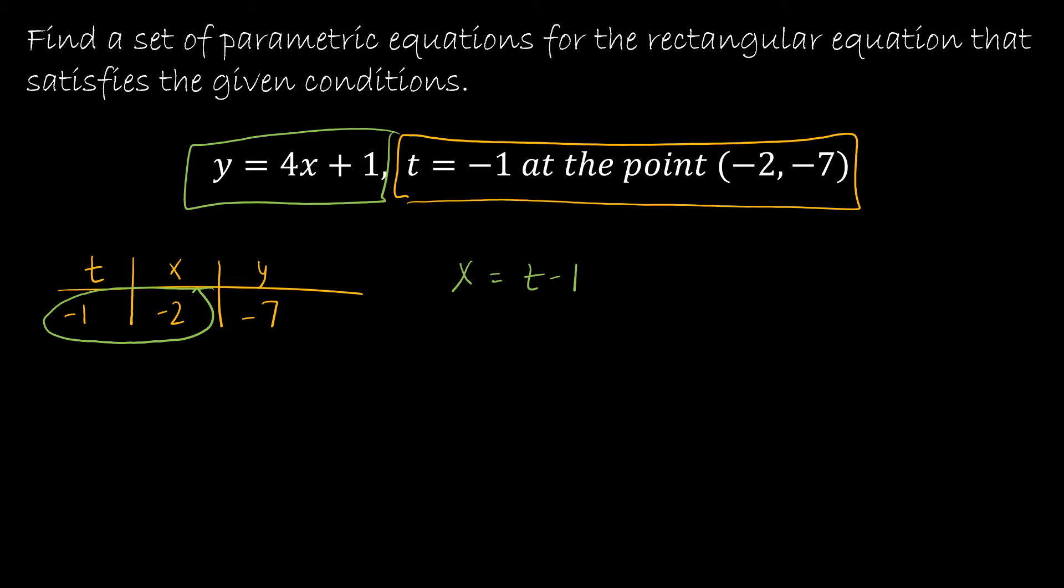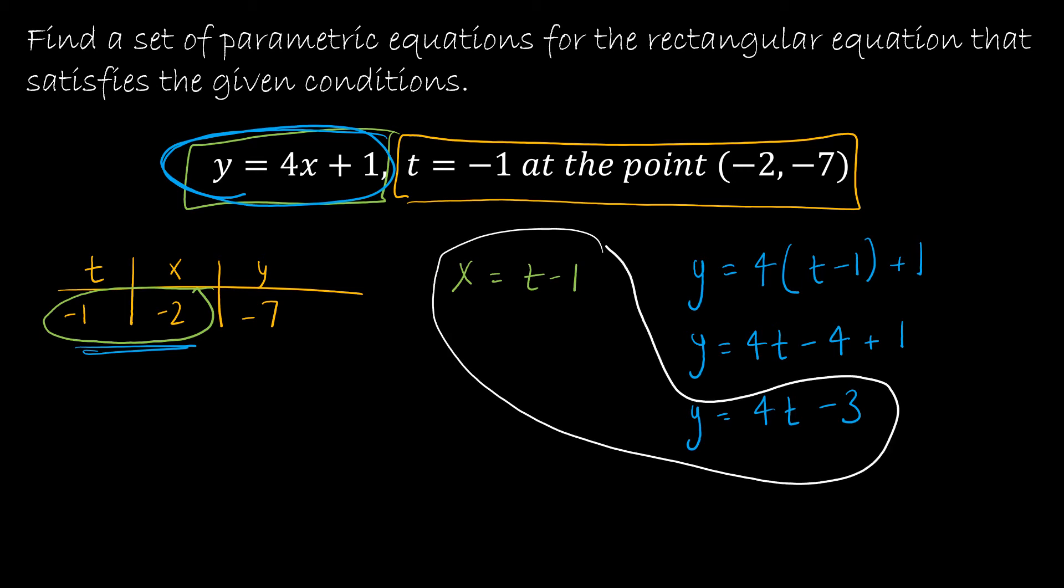If I let x equal t minus 1, which retains this relationship, then y is going to be based on the rectangular equation. So y is going to be 4 times x, which is now t minus 1 plus 1. So y is 4t minus 4 plus 1, not t, plus 1. So y is equal to 4t minus 3. So my set of parametric equations is x is equal to t minus 1 and y is equal to 4t minus 3.